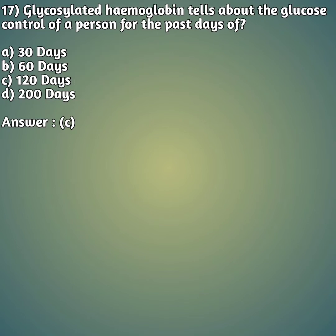Question 17: Glycosylated hemoglobin tells us about the glucose control of a person for the past how many days? Glycosylated hemoglobin, our routine test HbA1c, can be estimated for — option A: 30 days, option B: 60 days, option C: 120 days, option D: 200 days. The right answer is option C, 120 days. Glycosylated hemoglobin tells us about glucose control over 120 days.